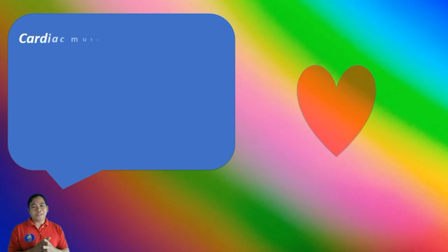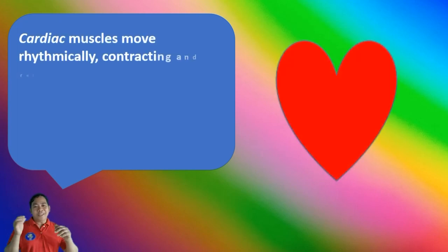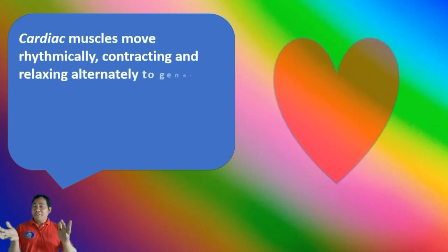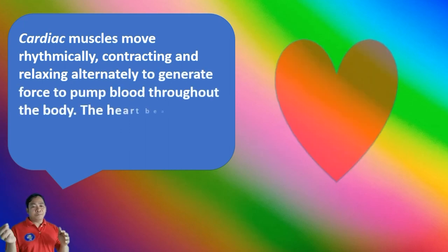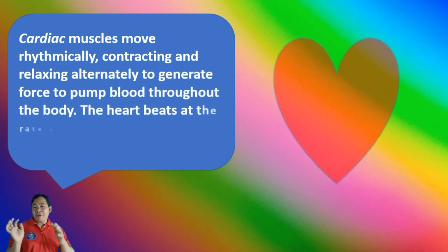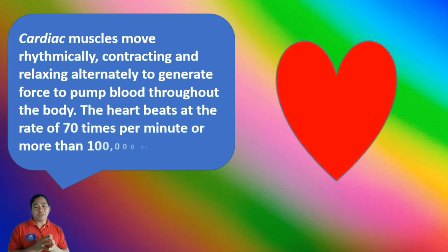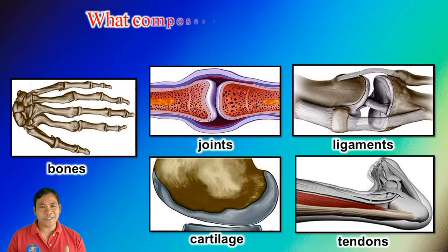Cardiac muscles move rhythmically, contracting and relaxing alternately to generate the force to pump blood throughout the body. The heart beats at a rate of 70 times per minute, or more than 100,000 times a day. Now, what composes the skeletal system?